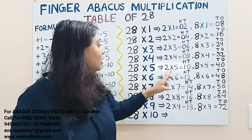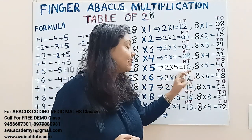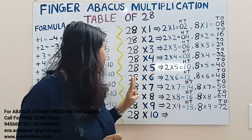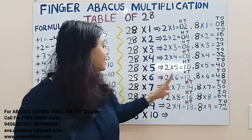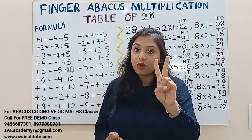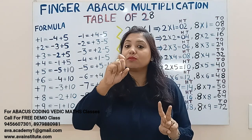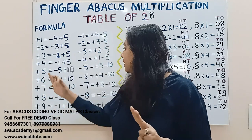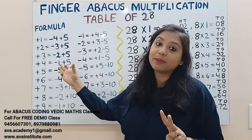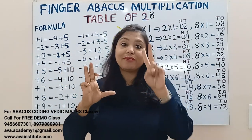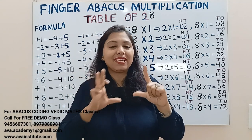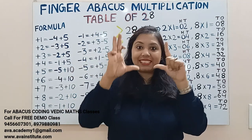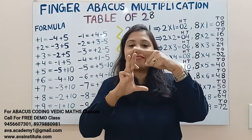Next, 28 sixes: 2 sixes are 12 — in hundreds: 1, in tens: 2. Now 8 sixes are 48 — in tens add 40, in ones add 8. How to add 40: plus 4 formula is minus 1 plus 5, so plus 40 formula is minus 10 plus 50. So the answer: 100, 150, 160, 161, 162, 163, 164, 165, 166, 167, 168. 168 is the answer.